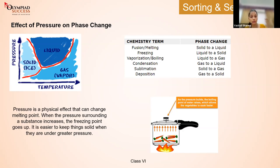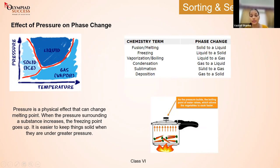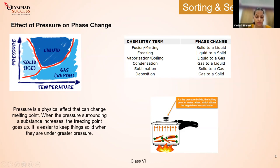When you boil water and place a lid over the pan, after some time you see droplets on the lid — that is the condensed form of water. This is condensation: gaseous state converting to liquid. Sublimation is a process in which solid directly turns to gas. Conversely, when gas converts directly to solid, the process is called deposition.